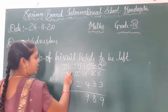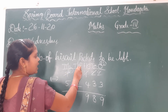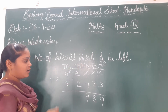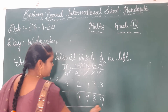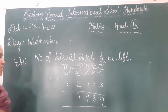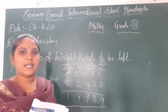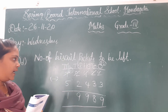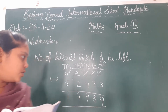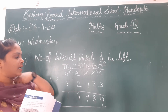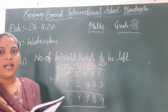1 minus 2 — we cannot subtract. So borrowing: 7 becomes 6 and 1 becomes 11. 11 minus 2 is 9, and 6 minus 5 is 1. So the number of biscuit packets left is 19,989.